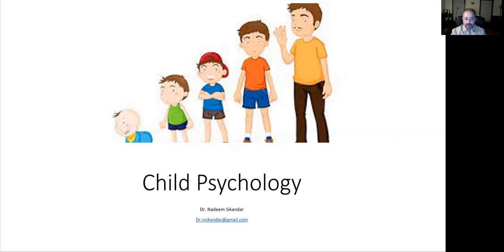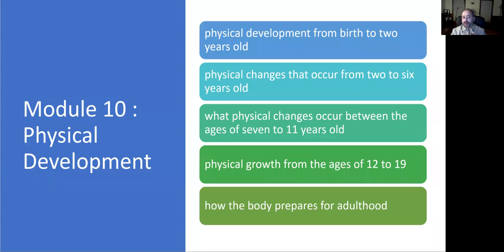Let's get into the objective of this module. We will be looking at the development from birth to two years of age, the two to six years of physical changes, physical changes from 7 to 11 and 12 to 19, and finally how the body prepares for adulthood.